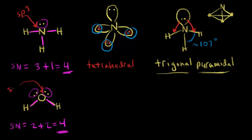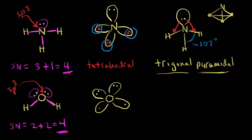Oxygen is sp3 hybridized, so we draw it out with its four sp3 hybrid orbitals. In terms of electrons, one orbital gets one electron, another gets one electron, and the remaining two orbitals get two electrons each — that accounts for oxygen's six valence electrons. Drawing in the hydrogens, each hydrogen has one electron in an unhybridized s orbital. The overlap of orbitals forms one sigma bond and another sigma bond — our two sigma bonds for water.